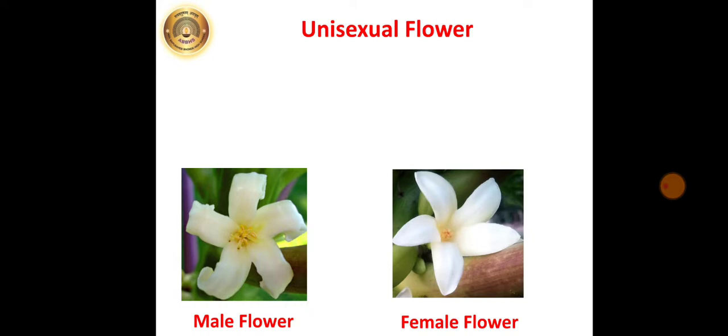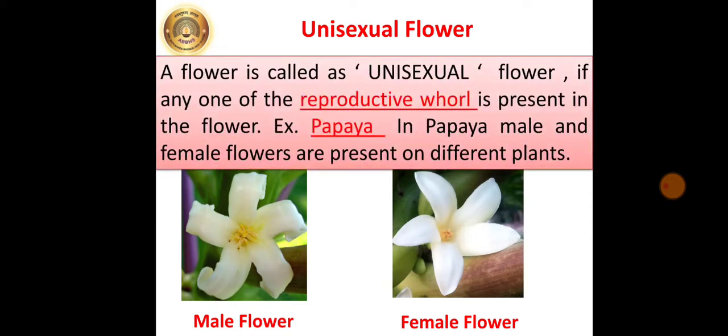Next we are going to see unisexual flower. If the androecium and gynoecium both are present in one and the same flower, then it is known as bisexual flower. Hibiscus flower, earlier which we have seen, is a bisexual flower. But, the flower which is shown over here, this is a flower of papaya. It is unisexual flower. Means, either they are having the male part or female part. A flower is called as unisexual flower if any one of the reproductive whorl is present in the flower. Example, papaya. In papaya, male and female flowers are present on different plants.